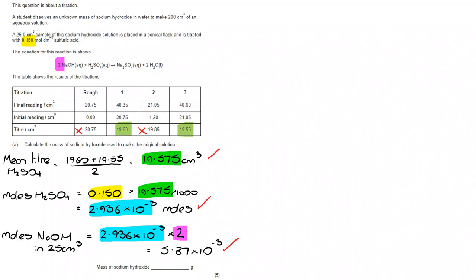If I've got my number of moles of NaOH in 25 cm³, I need to find out how many I had in my initial 200 cm³ sample. Remember, that's how much I made, and then I took a 25 cm³ sample to do the titration.